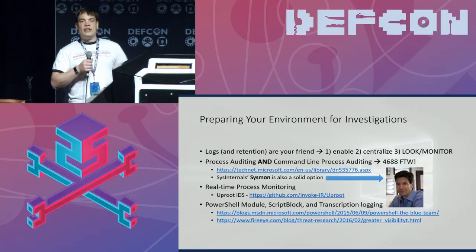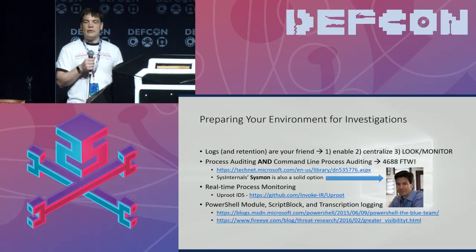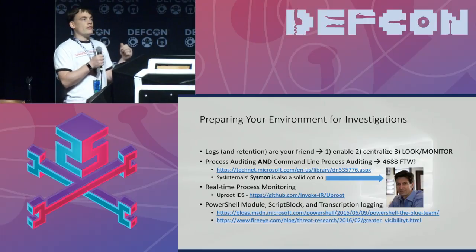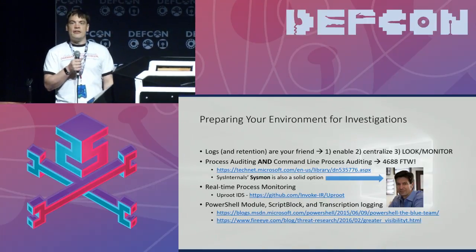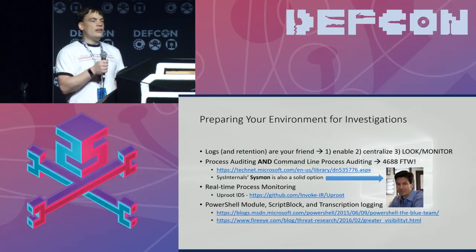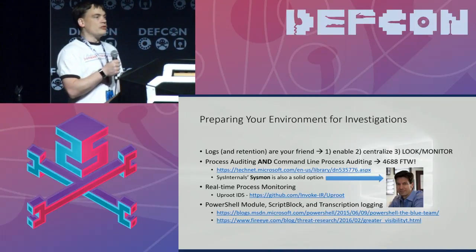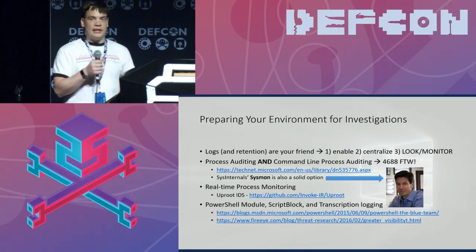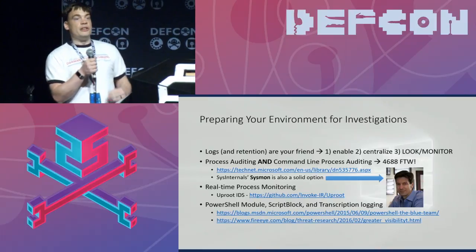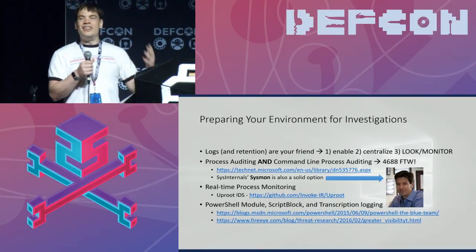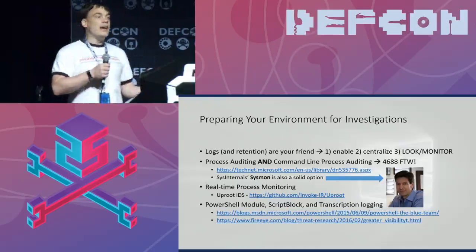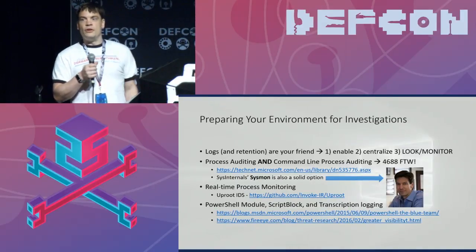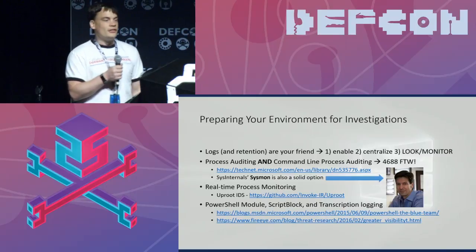You can't get any of this intelligence unless you've got logging enabled. Make sure that you've got command line logging enabled — that's event ID 4688. You can also get it from Sysmon. Make sure you've also got PowerShell script block logging enabled. PowerShell version 5 has brought in tons of awesome security stuff, and attackers aren't in the habit of enabling this stuff for you. If you care about it, do it first.